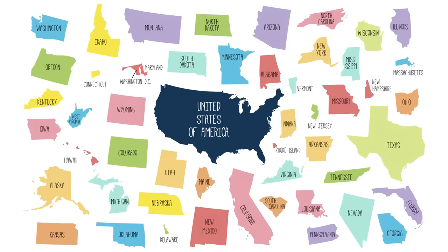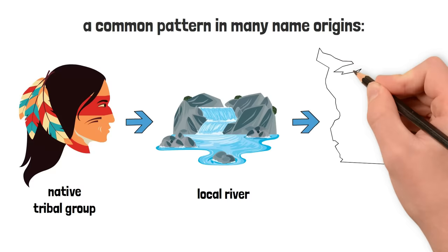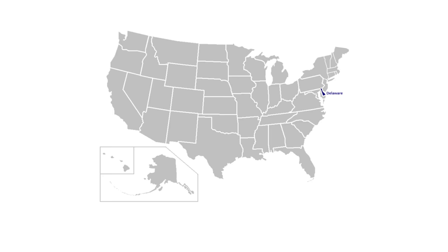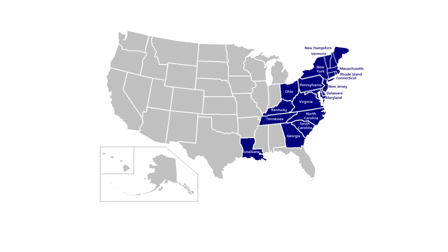The origin of the names varies a lot depending on each state, as we'll see now. But there is a somewhat common pattern in many of them: having the initial origin in a native tribal group of the region, which led to the naming of a local river, then to a colonial territory that shared the name with the river, and then transitioning into statehood. So now let's go one by one and understand the known or predicted origin of each state.